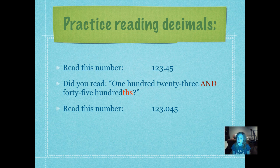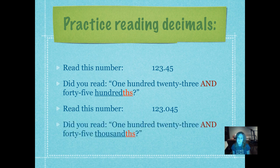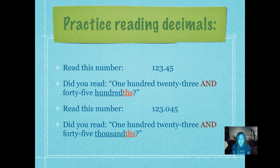Read this number — pause while you read it. Did you read '123 and 45 thousandths'? This time the 5 is in the thousandths place. Decimal, tenths, hundredths, thousandths — so the 5 ends in the thousandths place. So we read it '45 thousandths.' We don't say that zero at all. If we were reading a whole number, we wouldn't say '045,' so now we just say '45 thousandths.'